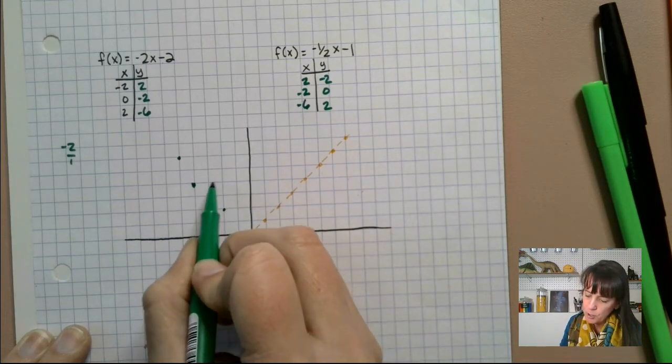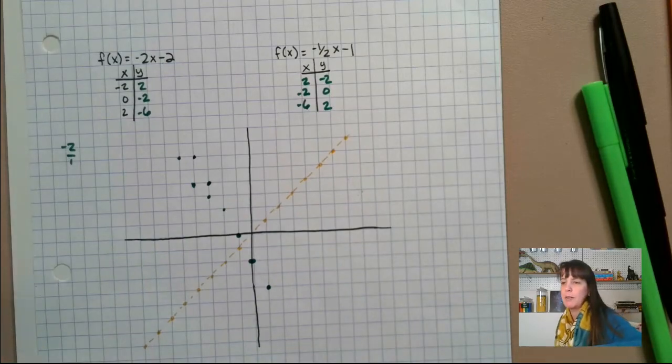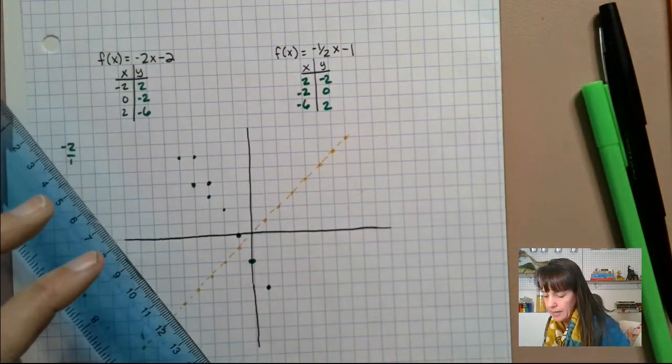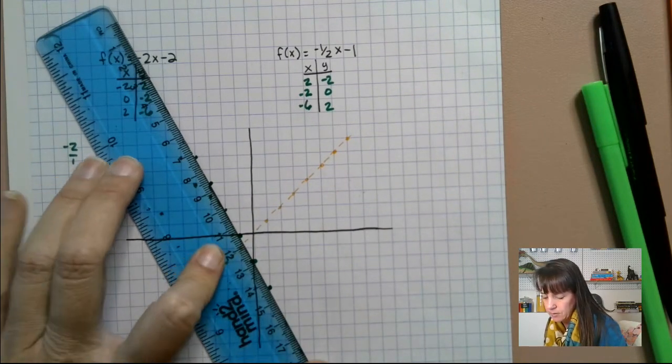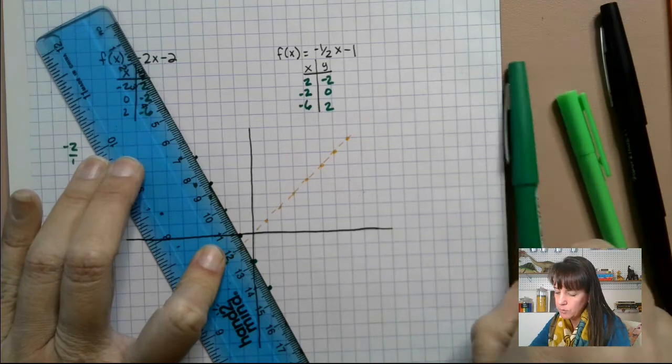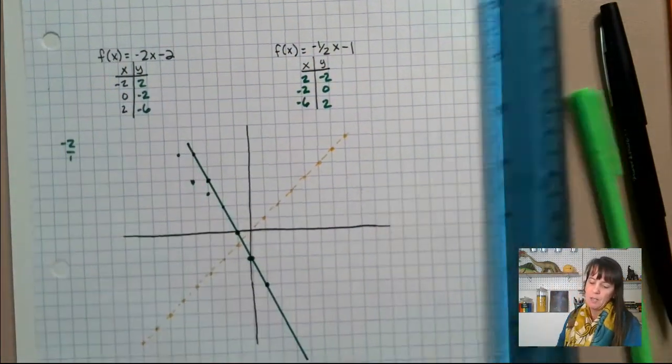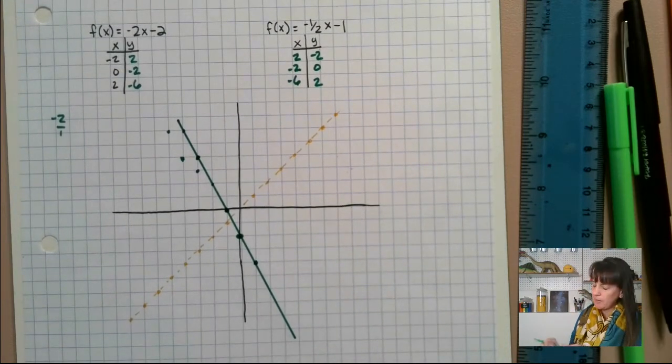And then we need to make sure to use a straight edge. So we've got this guy. Apparently I can't count today. We'll use this one. There's our first graph. Just ignore those green spots there. Nobody, we always make mistakes, right?